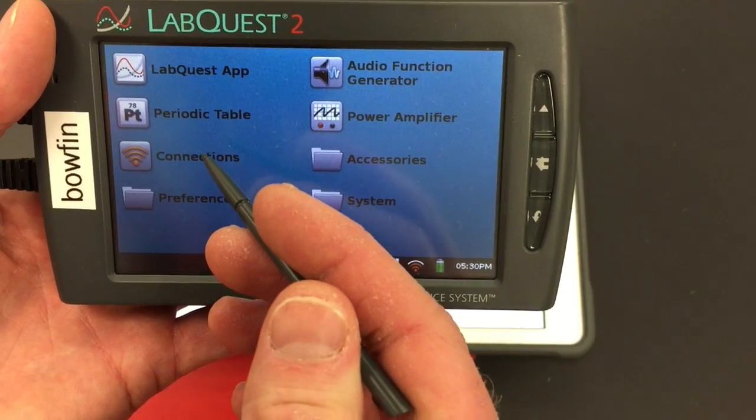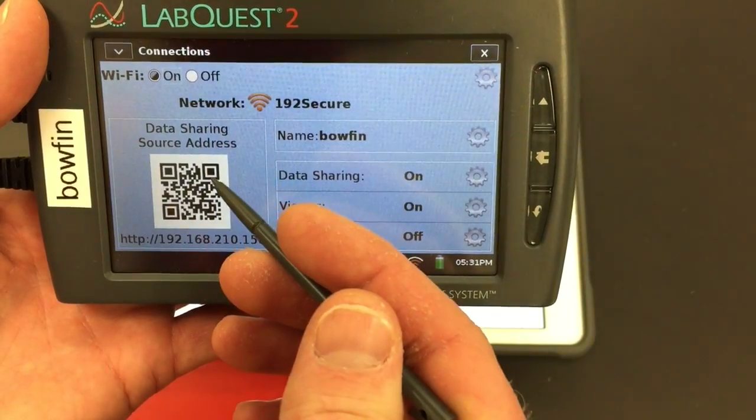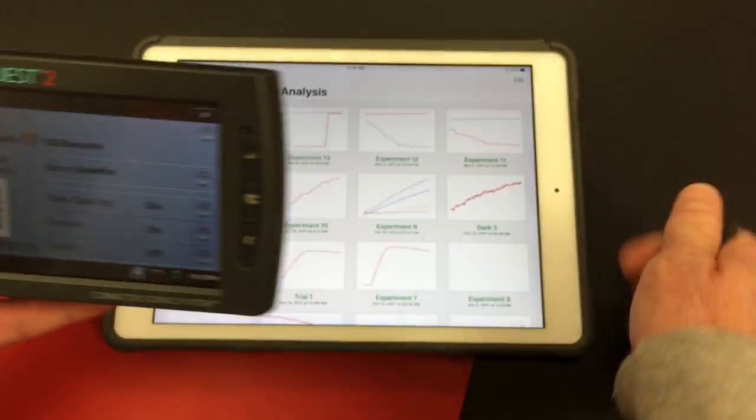Go to connections, hold the home button first, then connections, and then you can either type that or scan that code.